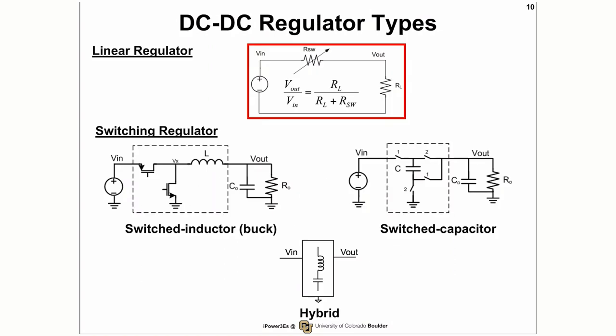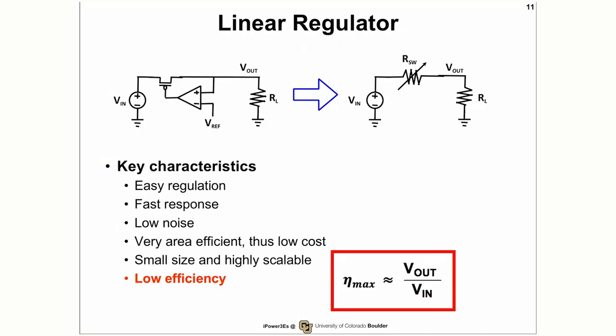To make DC-DC regulators or integrated DC-DC regulators, we have two main types of regulators: the linear regulator and the switching regulator. A linear regulator is essentially made by a controllable switch in series with the load from the input voltage. The switch on-resistance is controllable in series with the load resistance. That means it's very simple to implement, very easy to regulate, fast transient response, very low noise, area efficient, very small size, and highly scalable.